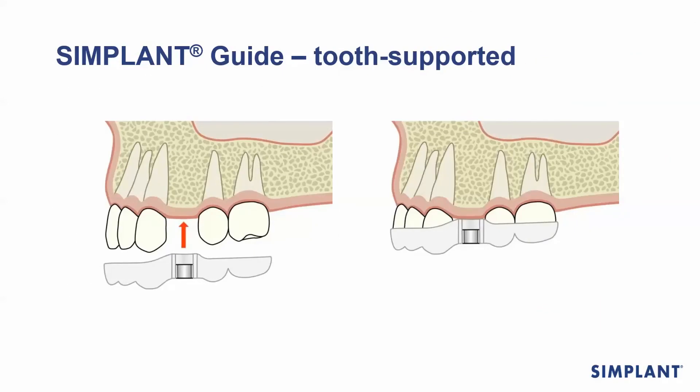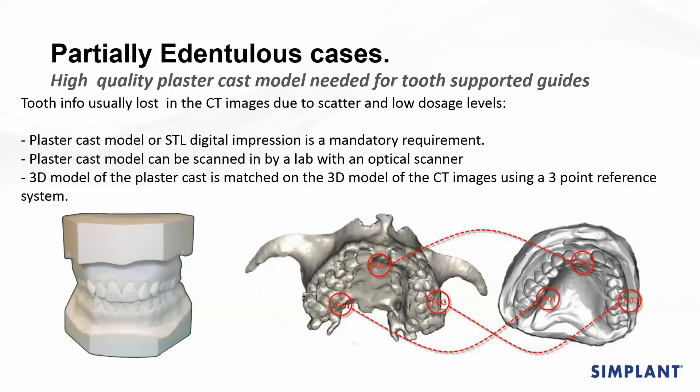Our next guide option would be our tooth supported stent. This stent sits directly onto the teeth, so the more teeth available the better — you've got more stability that way. For this protocol we definitely need some form of digital impression or impression of the patient's mouth. We cannot pour the models at our end; we would need the study casts sent to us. Ideally, send a silicone impression to your laboratory, get them to pour up the models, and then send the models to us.